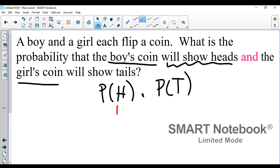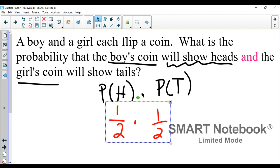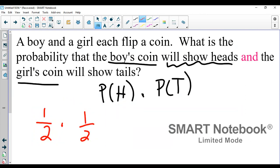When the boy flips his coin there's one head out of two total options. When the girl flips her coin there's one tails out of two total options. So to find the probability of both of these events happening, which is what a compound event is, one half times one half is one-fourth. You'd expect one out of every four times this would occur.